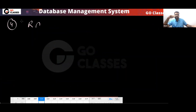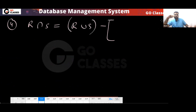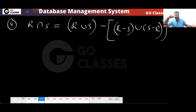There is another valid expression for R intersection S: R union S minus (R minus S) union (S minus R). So all of these forms can be correct.